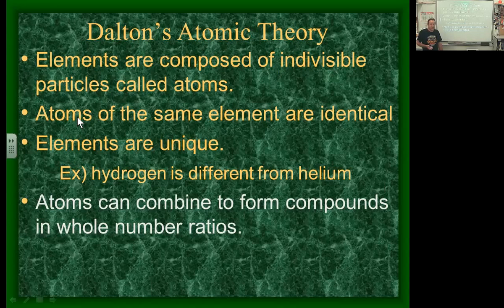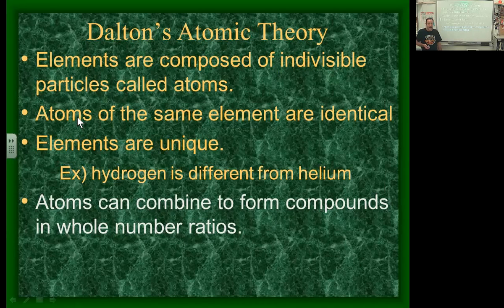Next concept: atoms can combine to form compounds in whole number ratios. This is true. For every two hydrogen atoms and one oxygen atom, you get water — H₂O. You don't have half of an oxygen atom reacting with one hydrogen atom. You always need entire atoms. The whole entire atoms have to react, so it's always going to be a whole number ratio.